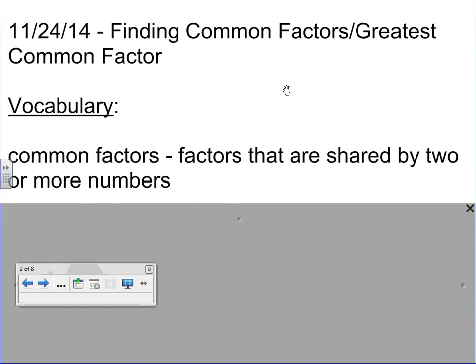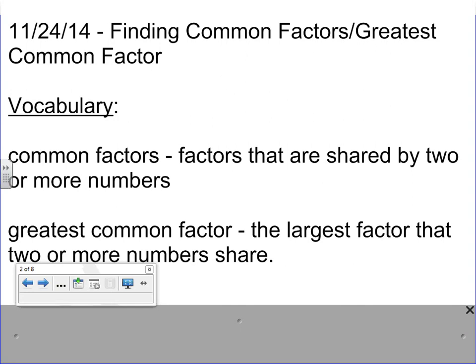But not only are we looking for common factors but the biggest thing we're looking for is the greatest common factor. And that is the largest factor that two or more numbers share. So we'll look at two different methods on how to find those factors and then how to determine what the greatest common factor is.